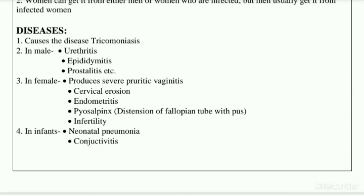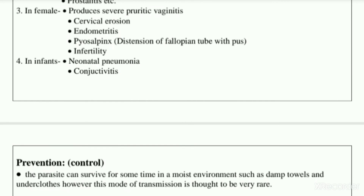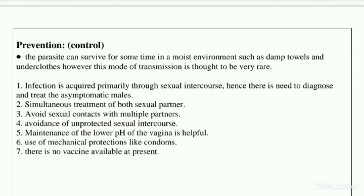In females it produces severe purulent vaginitis — infection of the vagina — and there may be cervical erosion. It also causes endometritis, which is infection of the endometrium, and pyosalpinx, which is distension of the fallopian tube with pus. It can also cause infertility in females. In infants it causes neonatal pneumonia and conjunctivitis.